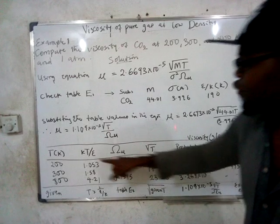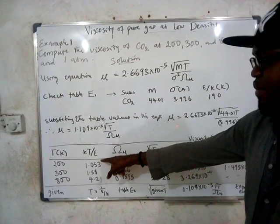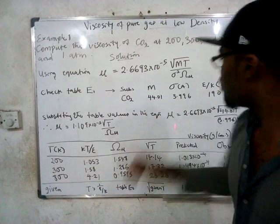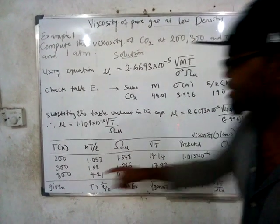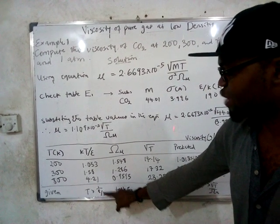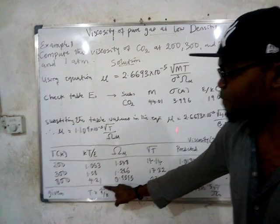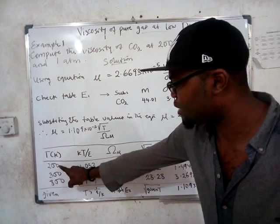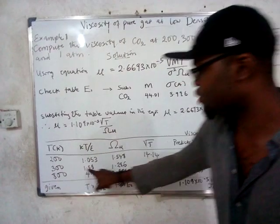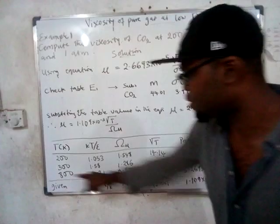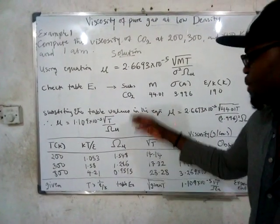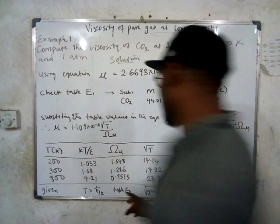To find kT/ε, simply take the inverse of ε/k, which is 1/190, and multiply by each temperature. So: 1/190 × 200 gives the first value, 1/190 × 300 gives the second, and 1/190 × 800 gives the third. This is very straightforward.